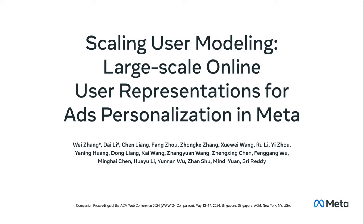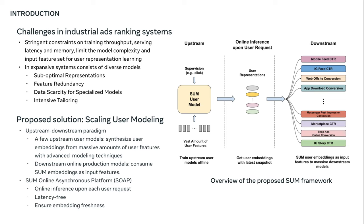Hi everyone, I'm Dai Li and I am presenting our work titled Scaling User Modeling: Large-Scale Online User Representations for Ads Personalization in Meta. Effective user representations are pivotal in personalized advertising. However, in industrialized ranking systems, practical constraints such as training throughput, serving latency, and host memory often limit the model complexity and input feature set used for user representation learning.